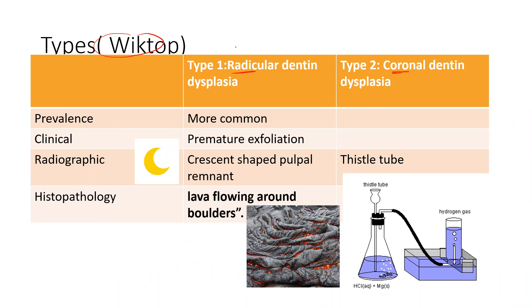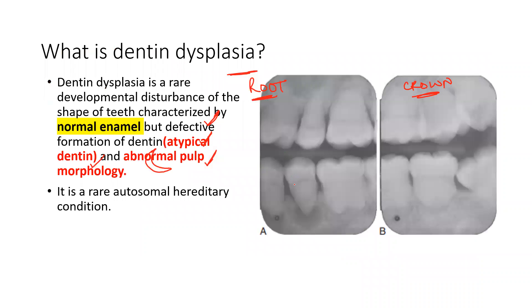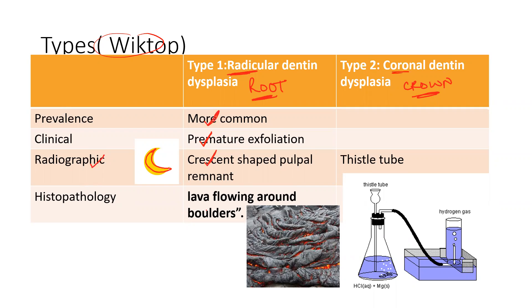Radicular dentin dysplasia — radicular means root, whereas coronal means crown. Naturally, radicular has a greater effect on the root. It is more common. There is premature exfoliation because of a shorter root. Radiographically, you see a crescent-shaped pulpal remnant — the dentin completely obliterates the pulp, leaving only a crescent-shaped pulp. Histopathologically, you see lava flowing around boulders, where lava represents dentin and boulders represent obstacles or denticles — dentin forming around denticles is called lava flowing around boulders, which is characteristic of radicular dentin dysplasia.